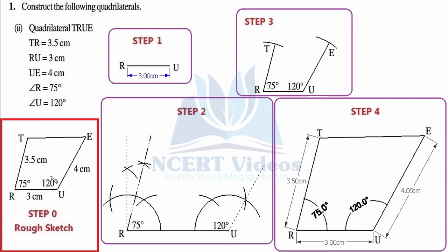In step number two, we need to construct 75 degrees at R and 120 degrees at U respectively. The idea to construct 75 degrees is: 60 + 15 degrees = 75 degrees. So let's first construct 60 degrees. A word of caution: this time it is 3 centimeter, so we adjust the compasses proportionately — we set the compasses to 1 centimeter considering the dimension of 3 centimeter.